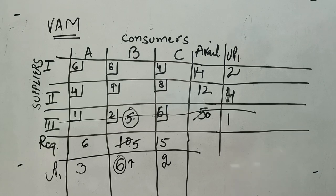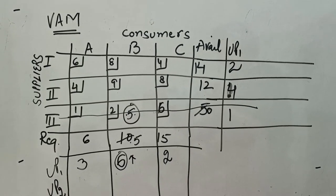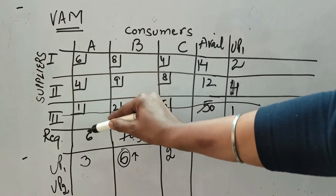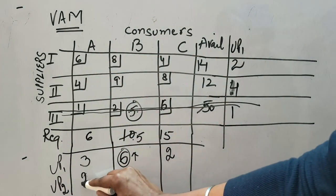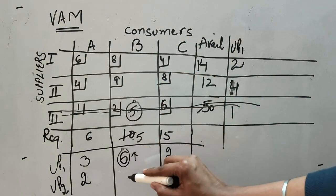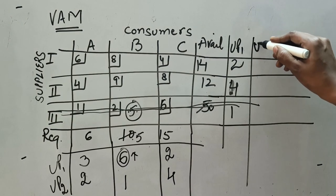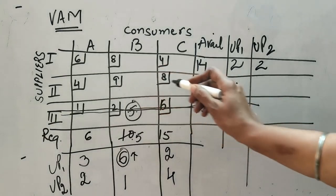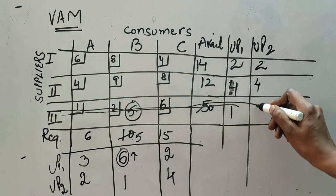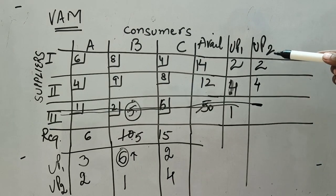Now we calculate UP2, the second unit penalty, after deleting the third row. Only two rows remain. For the first column, minimum is 4 and next minimum is 6, difference is 2. For the second column, values are 8 and 9, difference is 1. For the third column, values are 8 and 4, difference is 4. Column-wise UP2: for column A minimum is 4 and next minimum is 6, difference is 2; for column B minimum is 4 and next minimum is 8, difference is 4; the third row has been deleted so no value there. Unit penalties UP2 are: rows 2, 1, 4 and columns 2, 4 — the highest values are 4 and 4, creating a tie.